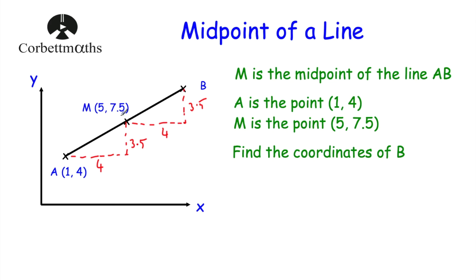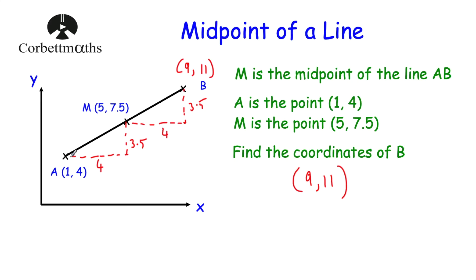From M at x equals 5, going another 4 across gives 9. For the height: M is at 7.5, and going up another 3.5 gives 7.5 plus 3.5 equals 11. So the coordinates of point B are (9, 11). I like this approach — think how to get from the known point to the midpoint, then do the same again to reach the other point.